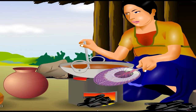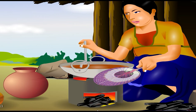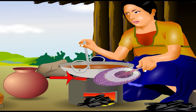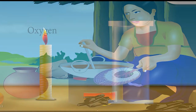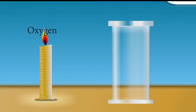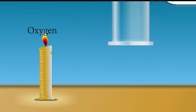The lady is cooking on a charcoal stove. Charcoal is a type of fuel; the burning charcoal produces heat for cooking. Why is there an opening at the side of the stove? The opening at the side of the stove helps to take in more air for combustion. Air is needed for combustion.